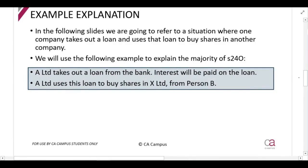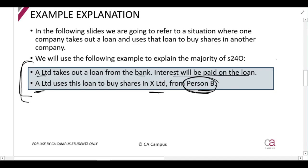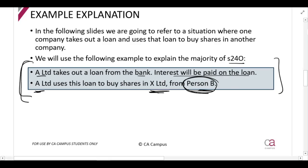In the example I'll be using: A Limited takes out a loan from the bank, there will be interest on the loan, and A Limited uses this loan to buy shares in X Limited from Person B. X Limited doesn't issue the shares — A Limited buys them from an existing shareholder. I'll refer to A Limited, X Limited, and Person B throughout the subsequent slides.